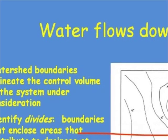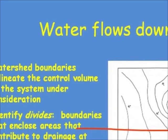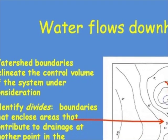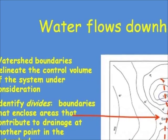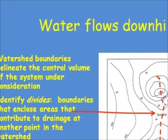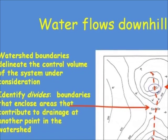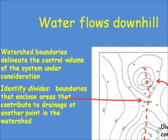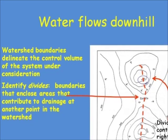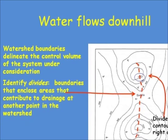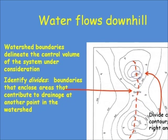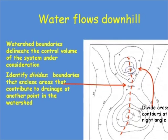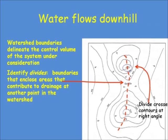The watershed boundary represents a series of divides that encloses areas that contribute to drainage at any other point in the watershed that we care about. A divide usually crosses contours at a right angle. The watershed boundary itself can be thought of as a line that connects the highest points around a surface water drainage system.